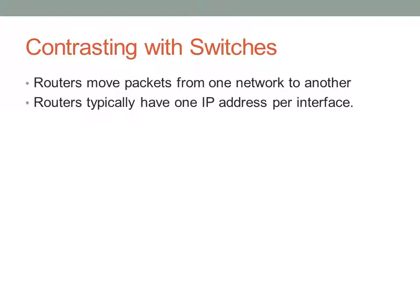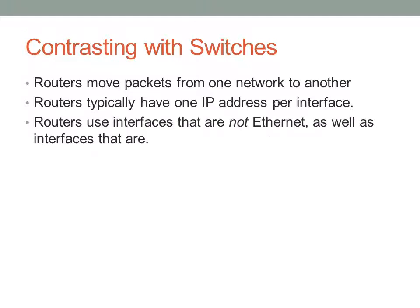That is to say, in a switch, all interfaces will typically be on the same network, on the same subnet. I'm talking here about a typical unmanaged Layer 2 switch in its simplest form. Routers tend to use interfaces that are not Ethernet, as well as interfaces that are. Typically, these non-Ethernet interfaces are used for high-speed or WAN connections.